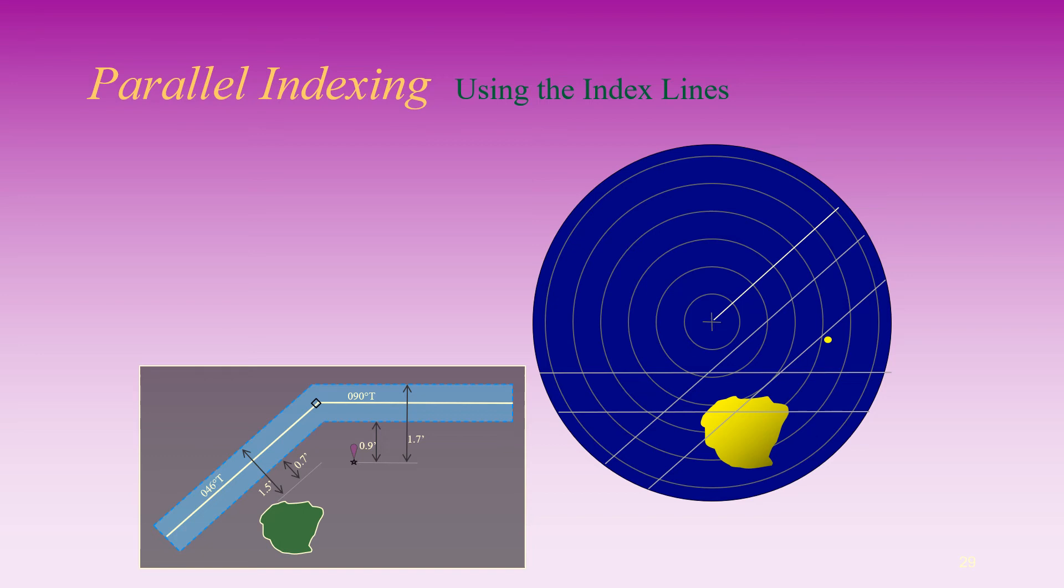The island, the northwest edge of the island, is still between the index lines of the first leg, 046 degrees true, indicating that the vessel has been maintained within the traffic lane on the first leg.